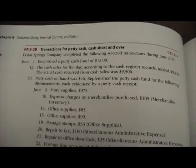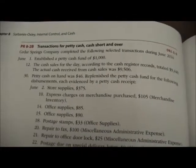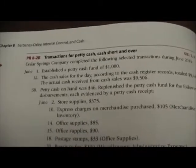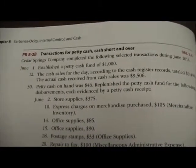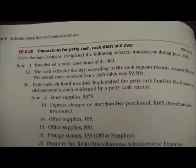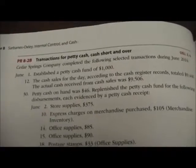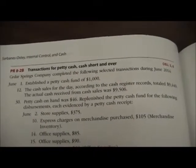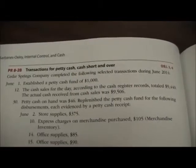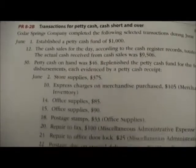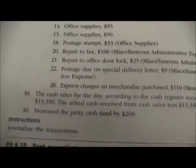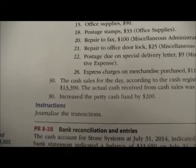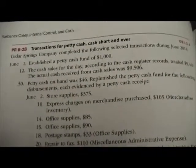For Chapter 8, we're going to do two problems, 8-2B and 8-3B. This first video is going to cover 8-2B, which is going to talk about petty cash and cash short and over. Cedar Springs Company completed the following transactions during June of 2014. Our instructions at the bottom tell us to journalize the transactions.